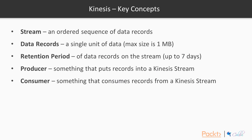Key concepts in Kinesis: a stream is the highest-order denomination — an ordered sequence of records, analogous to a DynamoDB table or S3 bucket. It's the highest grouping, and typically a single application uses a single stream. Data records are like individual table entries — a single unit of data with a maximum size of one megabyte. Each event in your event stream is one data record.